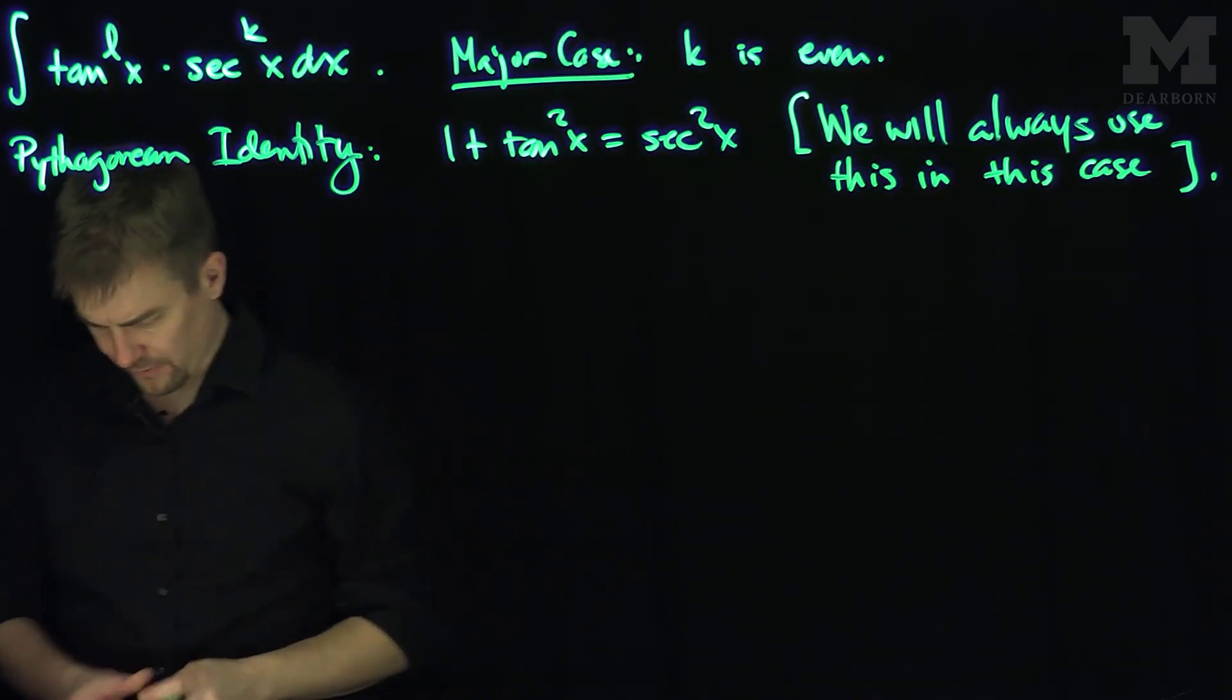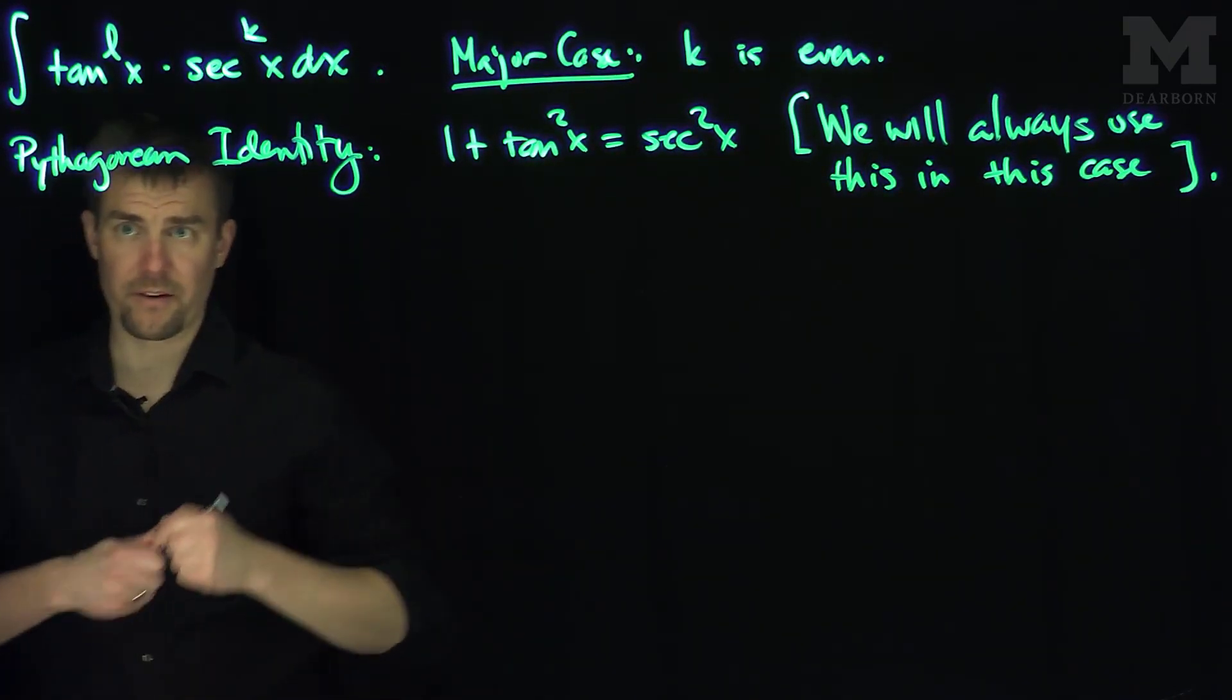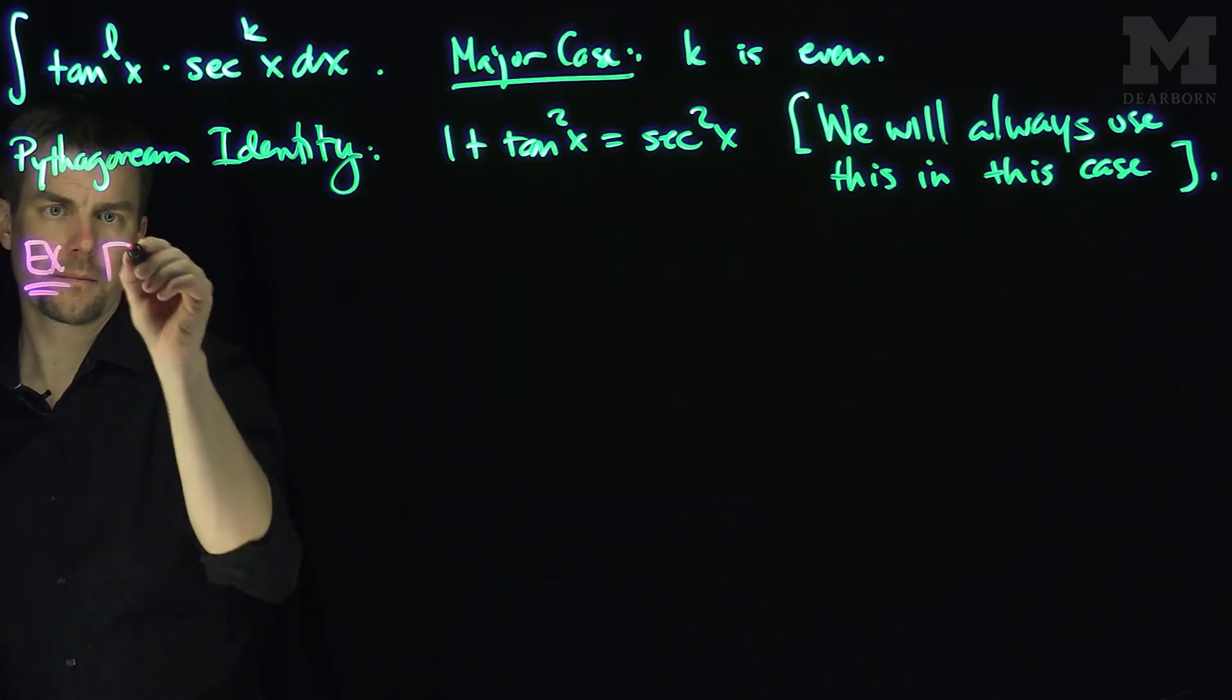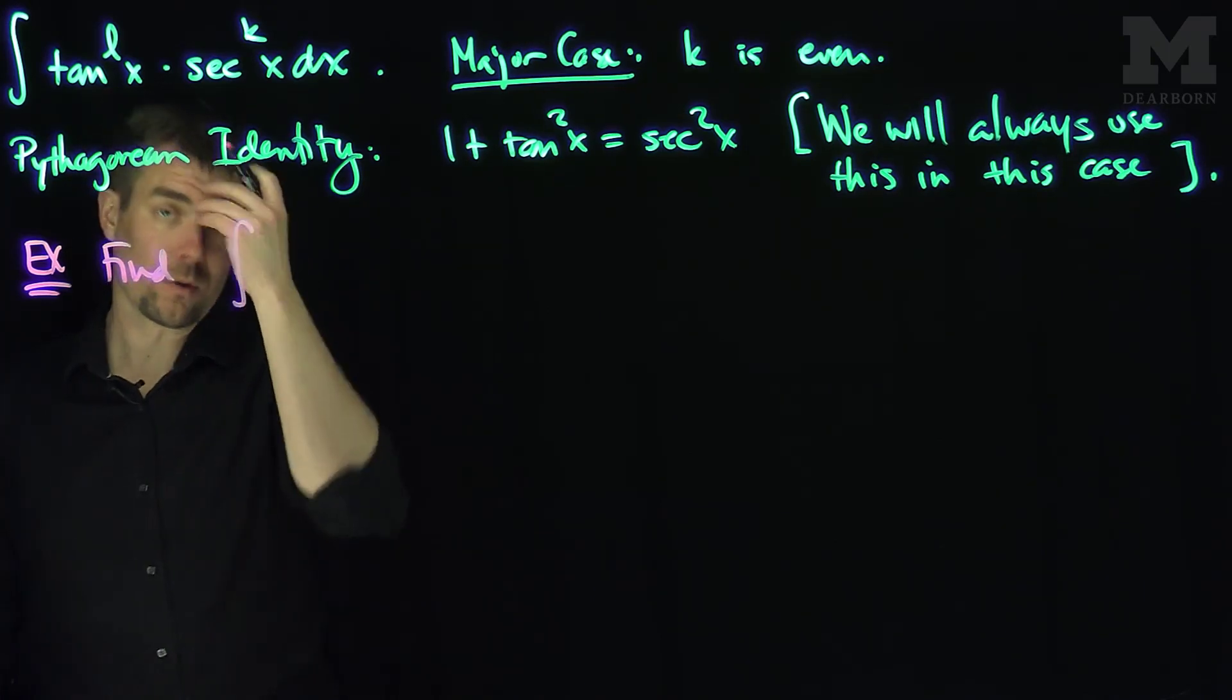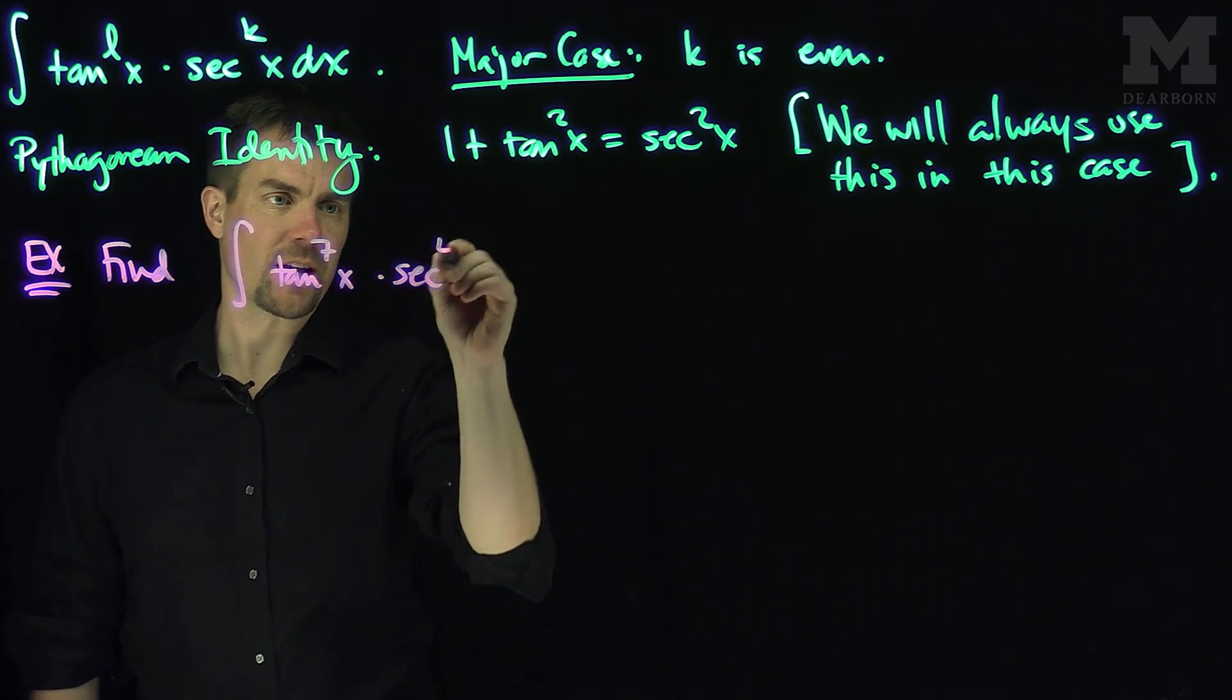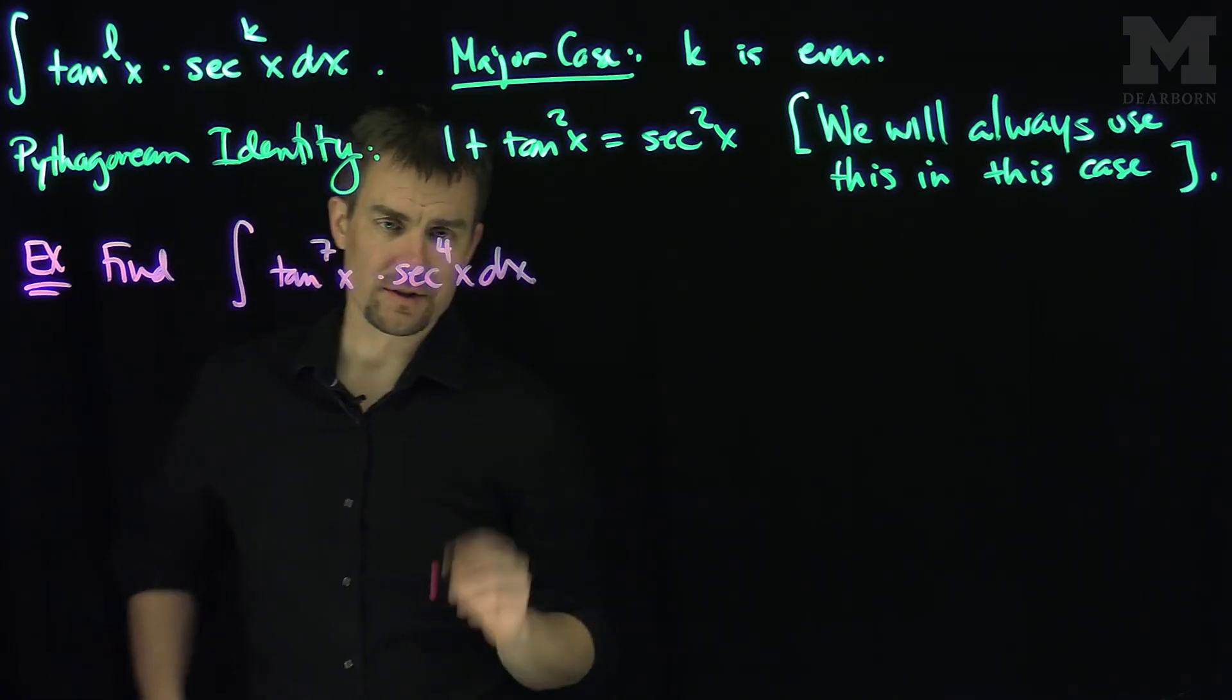Okay, let's see an example of that. One of my favorite odd numbers is 4. Let's plug it in. Let's find the integral of tangent to the seventh of x times secant to the fourth of x dx.